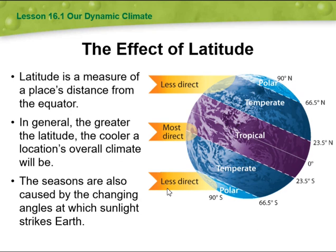The seasons are also caused by the changing angles at which sunlight strikes the Earth. We have here 0 degrees, which represents the tropical areas, and then 23.5 degrees north.